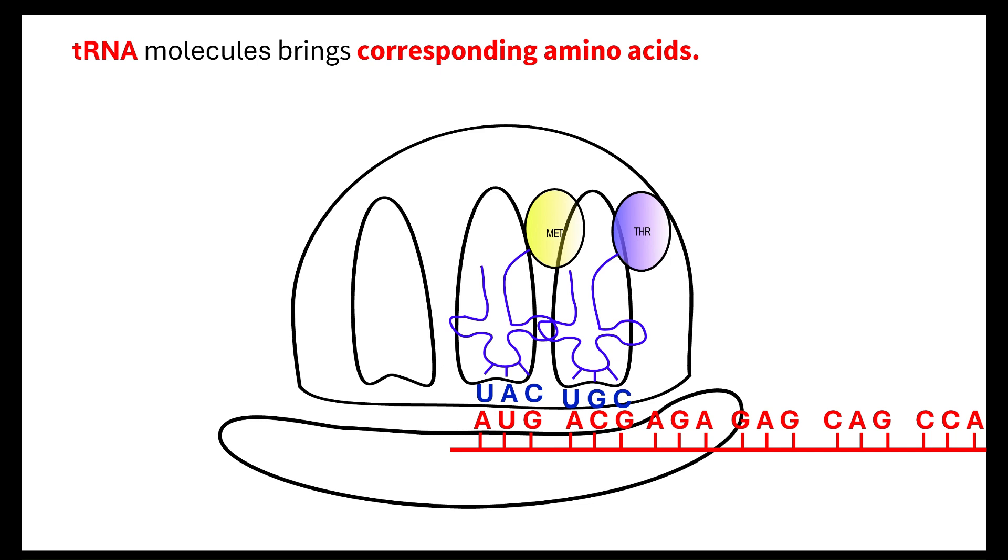Then the next tRNA is going to bring the next amino acid that corresponds. So, we can see here that our codon is ACG. Our anticodon is UGC. And that's going to bring along threonine to the next position. So, we can see quite clearly that we have two amino acids inside the ribosome.